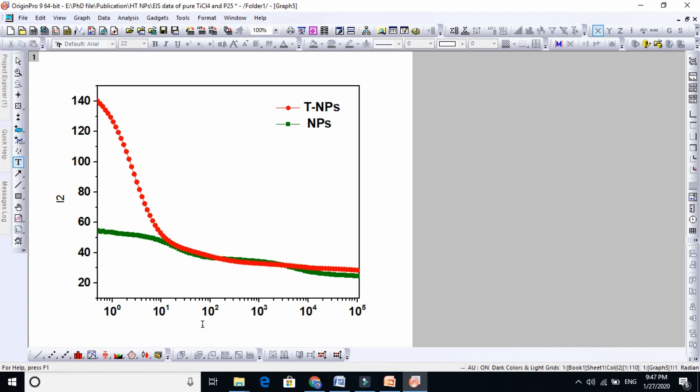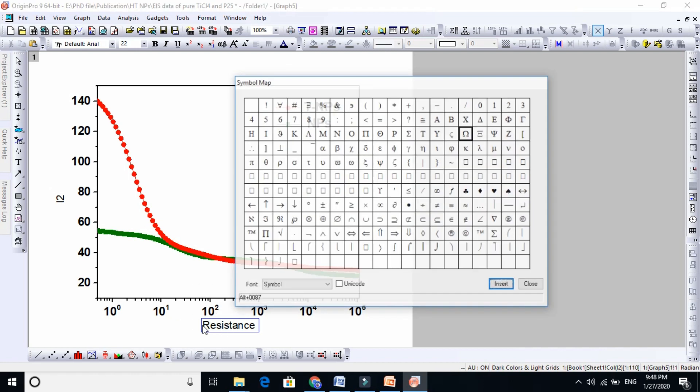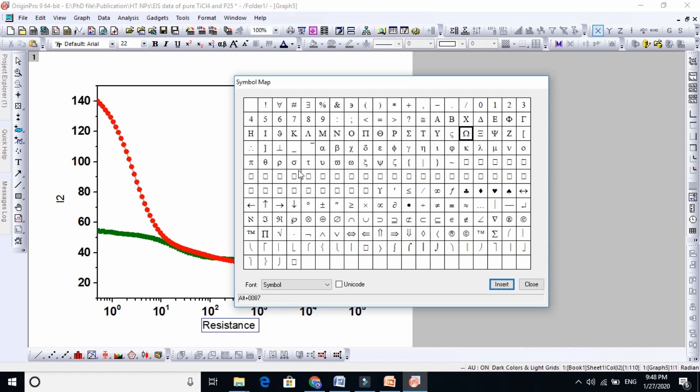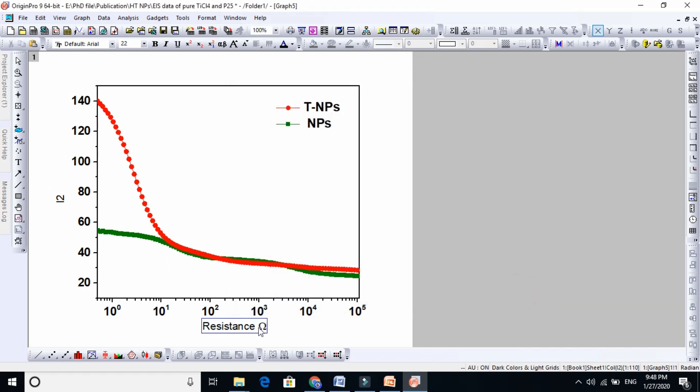Write resistance, and the unit of resistance is ohm. Just press Ctrl+M. Here you can see a lot of symbols. This is ohm here, so just press this and insert. Ohm will appear here, you see, and you just put it in parentheses. This is the unit of resistance.